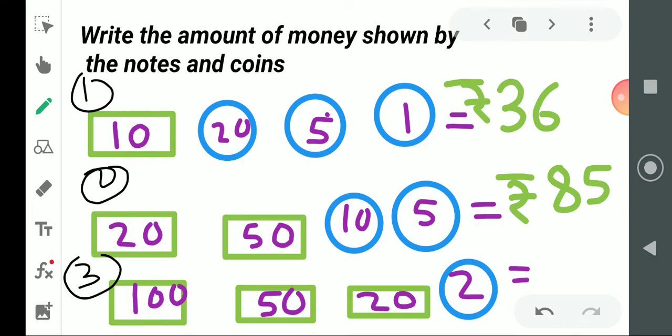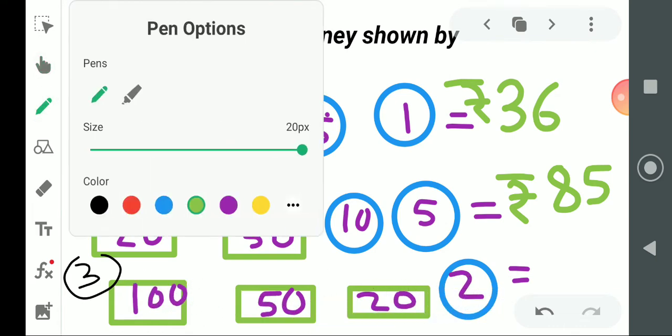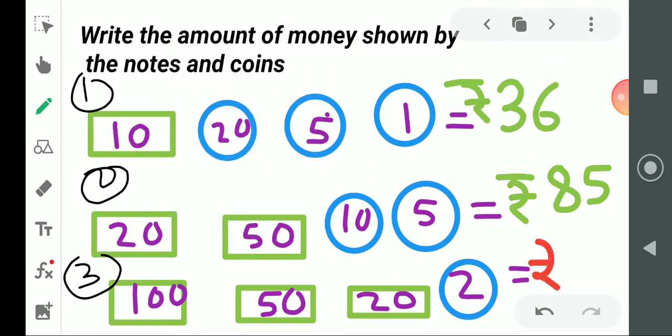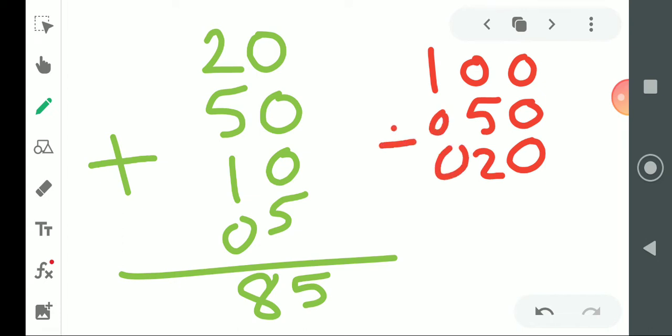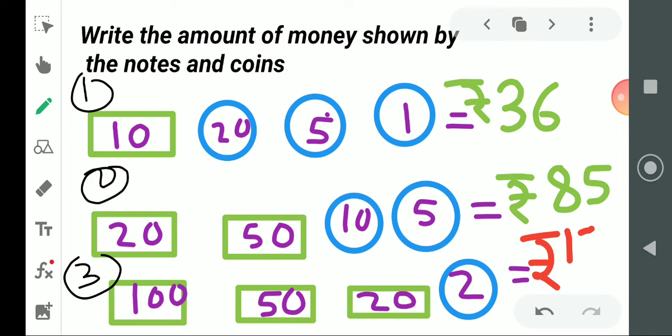Next, we have all the addition to do here. Here we have all the addition to do. See how to add 100, 50, 20. First 100, then 50. For 50, first 0, then 5. For 20, first 0, then 2. Here nothing, meaning 0. Add this, we get 0. 5 plus 2 is 7, and here we get 1. The answer will be rupees 170.